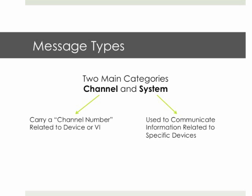Now talking about MIDI messages in general — that was just one example. There are two main categories: channel and system. Each category also has subcategories. Channel messages always carry a channel number, like the one we just saw, and they relate to a device or a virtual instrument. System messages communicate information related to specific devices and are a little more complex. We'll discuss both types one at a time.